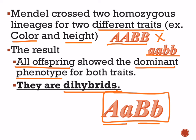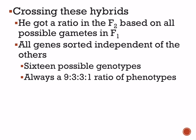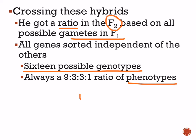He then did the same kind of experiment as with the monohybrid test cross. In the F2 generation, he got a ratio based on all possible gametes in the F1. All genes sorted independently of the others, giving us 16 possible genotypes in the dihybrid Punnett square. In the phenotype ratio, it was always 9 to 3 to 3 to 1.